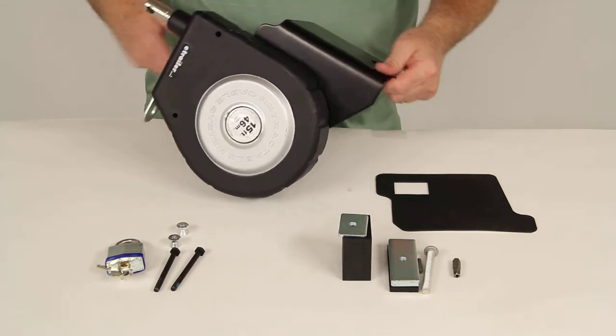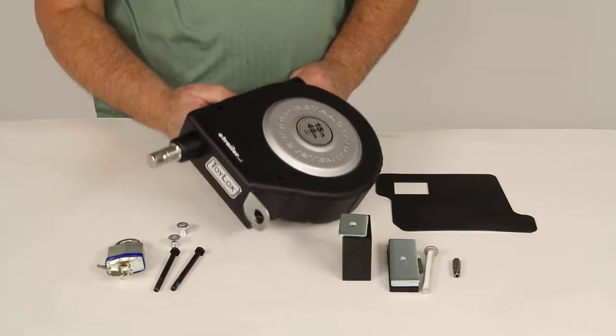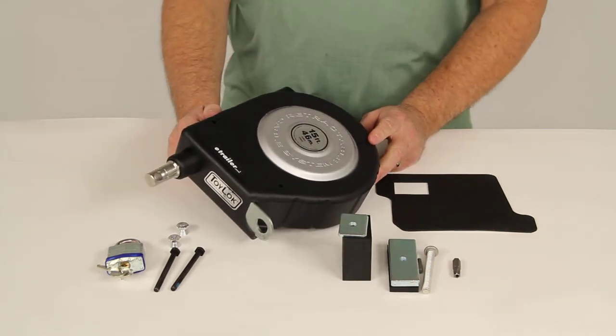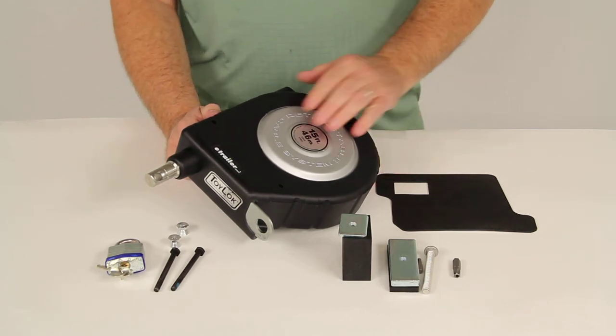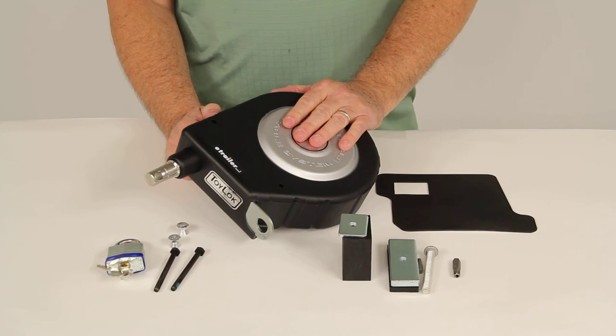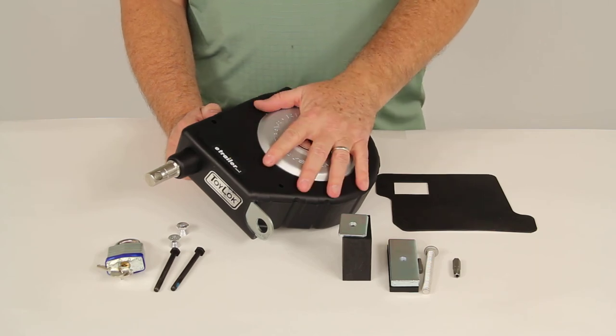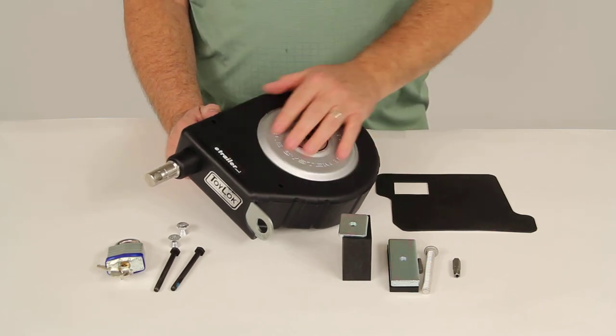But that should do it for the review on part number LC337120-337112, the Lippert Toy Lock Stake Pocket Mounted Retractable Cable Lock with a 15 foot cable.